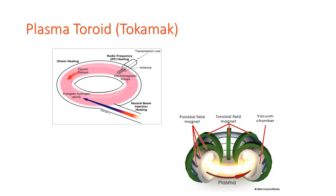A Tokamak is a device that uses a powerful magnetic field to confine a hot plasma in the shape of a torus. It is one of several types of magnetic confinement devices being developed to produce controlled thermonuclear fusion power. As of 2016, it is the leading candidate for a practical fusion reactor.